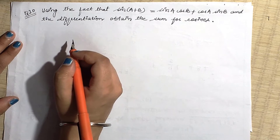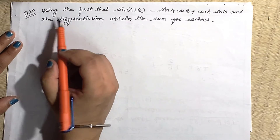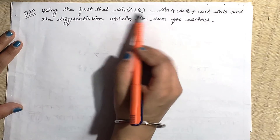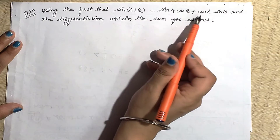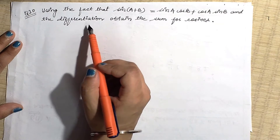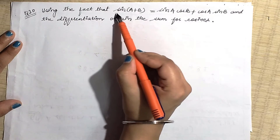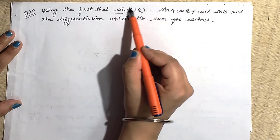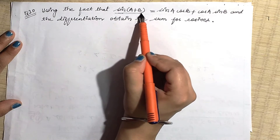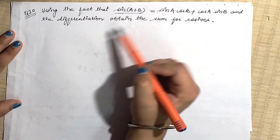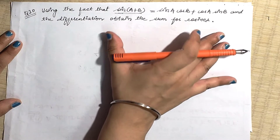Hello students, welcome back to my YouTube channel. Continuing from question number 20, we are using the fact that sine(a+b) has a known value, and through differentiation we will obtain the sum formula for cosine. You can see the sine values for the sum, meaning the sum a+b. The trigonometric identity formula you have already studied.